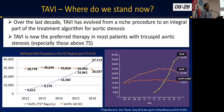I like to call TAVI a disruptive technology — disruptive because it has changed the current standard of practice. It used to be surgical aortic valve replacement, but with evidence built over the last 10 or so years, TAVI is now the gold standard for severe aortic stenosis in high-risk or intermediate-risk patients, and the number of TAVI procedures has gone up considerably.